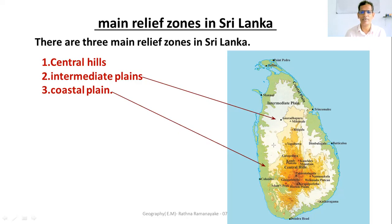Intermediate Plain. The land area between 30 metres and 300 metres belongs to the Intermediate Plain.